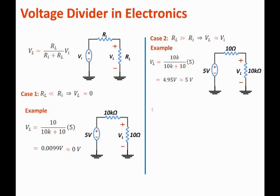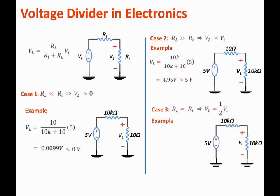The third important case is when the load resistance RL is equal to the internal resistance Ri. Then the voltage across the load is basically one half the total voltage VI. For example, with two resistors each equal to 10 kilohms: VL = 10k over (10k + 10k) times 5, which equals 2.5 volts. So if the two resistors are equal, the voltage is divided equally among the two resistors.